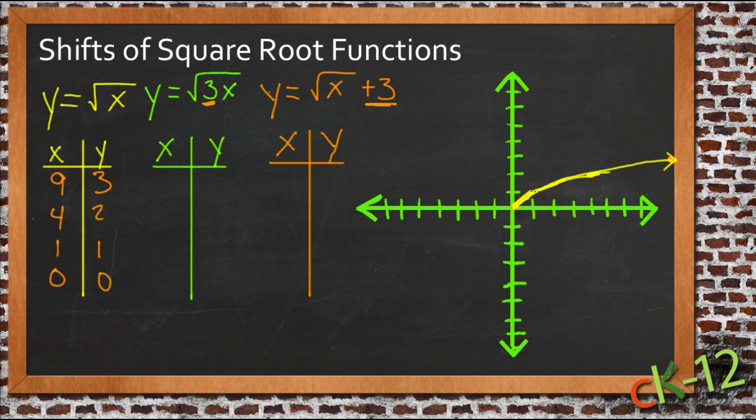And then the second graph we're looking at will be y equals the square root of 3x. So the difference here is that when we put in a number for x, we're going to multiply that number by 3 before we take the square root. Now obviously we're going to come up with some less easy numbers here, a little more complex answers. So I'm going to run them through a calculator. But if we start with say x is 3, then we take 3 times 3 which is 9, and the square root of 9 which is also 3. So if x is 3, y is 3. So that gives us a point right here.